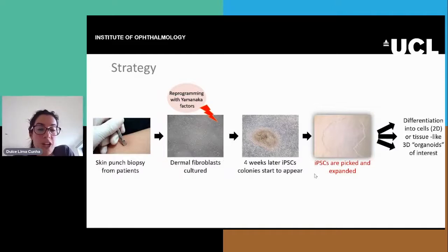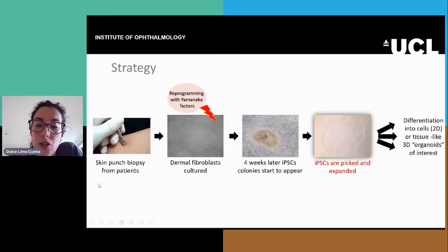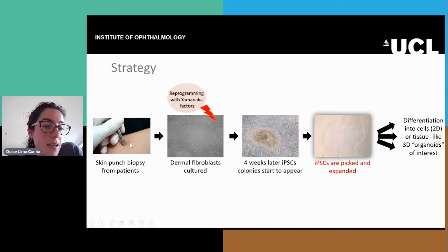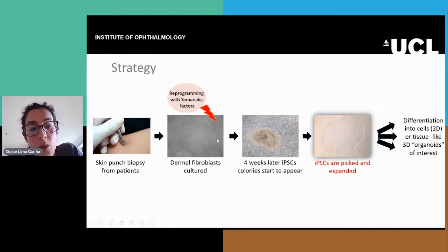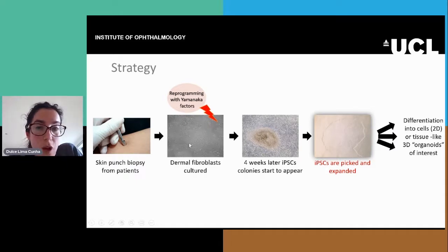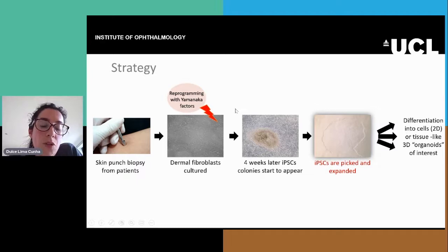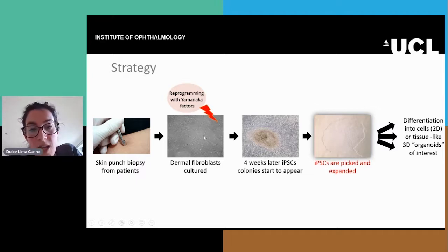So how are these cells generated? This is what we usually do in our lab. We start with a small skin biopsy from patients, and from the skin we extract dermal fibroblasts — the cells that are most common in the dermis. Once these cells are ready, we reprogram them with the Yamanaka factors, and then about four weeks later,